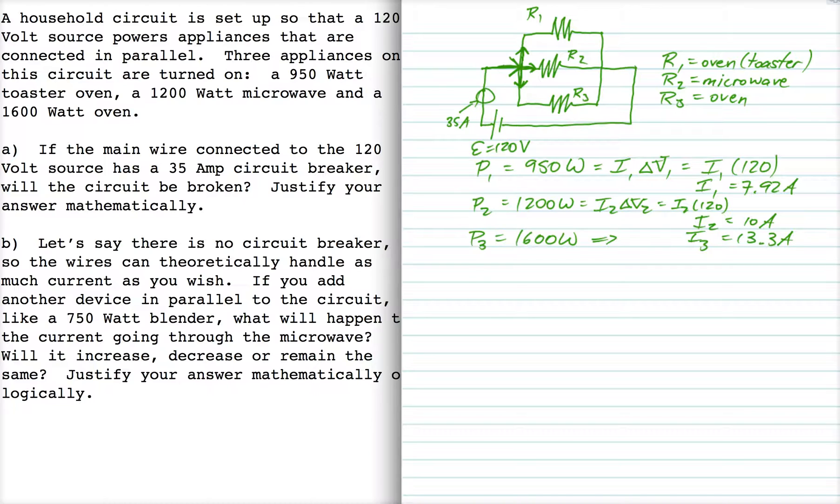Now we know from the junction rule that the total current here, going into this junction, is equal to the sum of the currents that are coming out of this junction, and that's 31.25 amps.